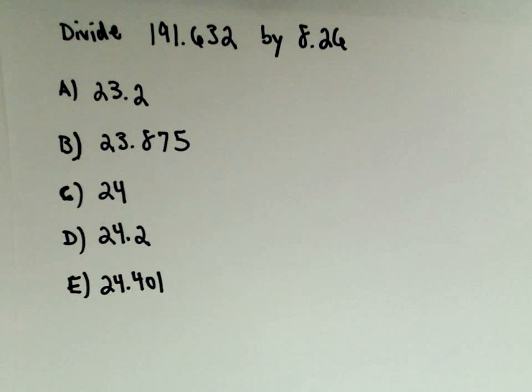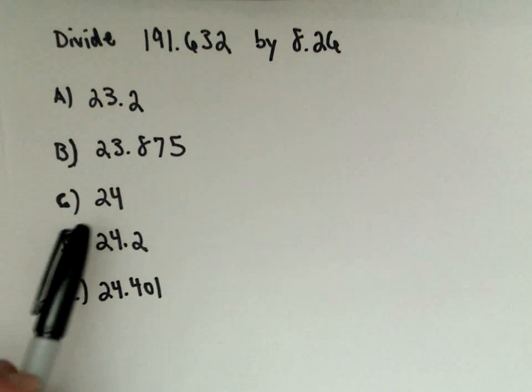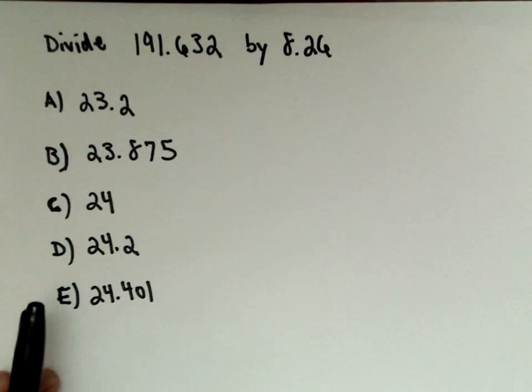Okay, so here we want to divide the number 191.632 by 8.26. So here we've got our answer choices: 23.2, 23.875, 24, 24.2, and 24.401.